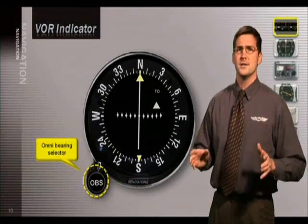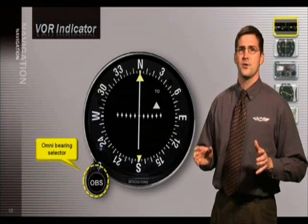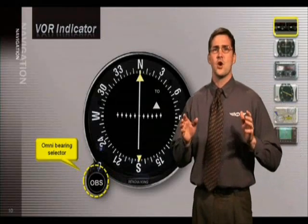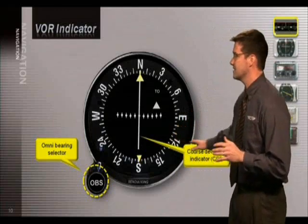Remember, radials are magnetic bearings outbound from the VOR ground station. Now this is the Course Deviation Indicator or CDI as it's referred to.